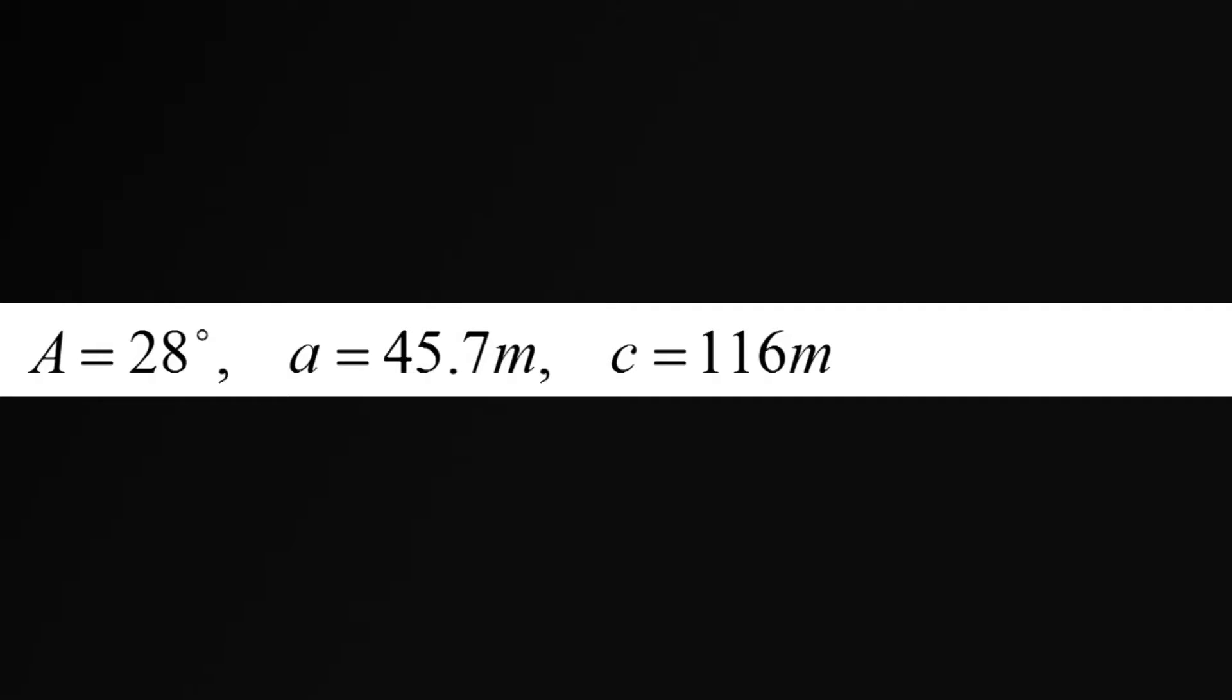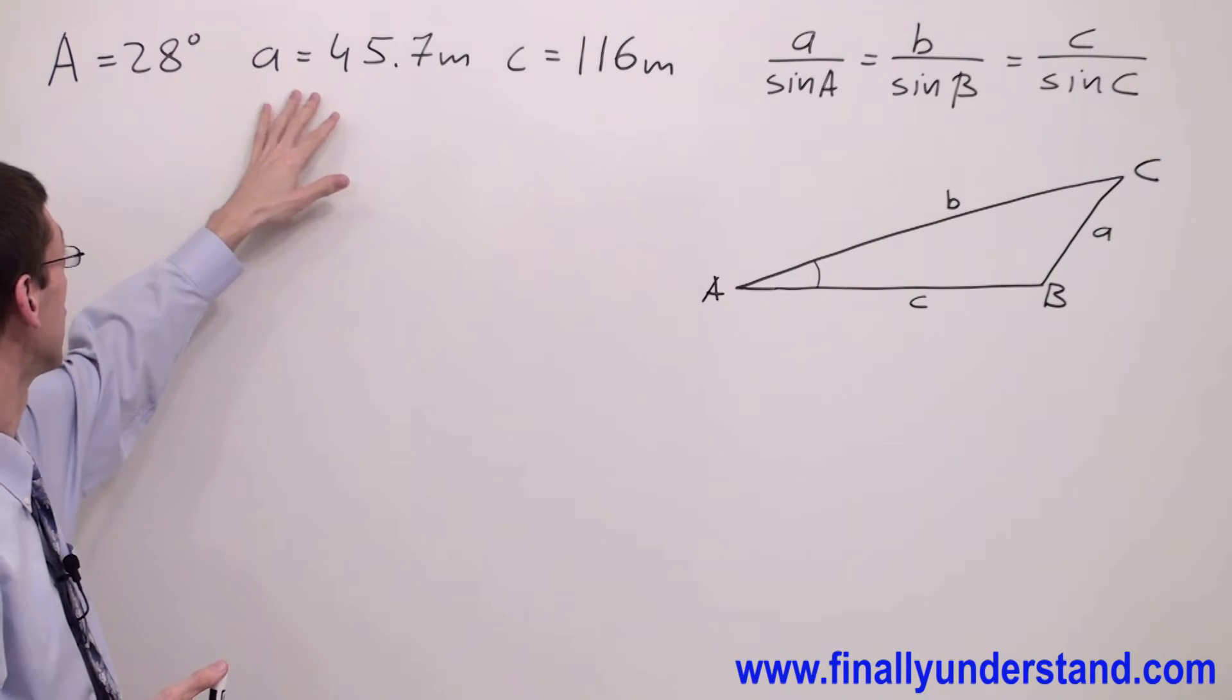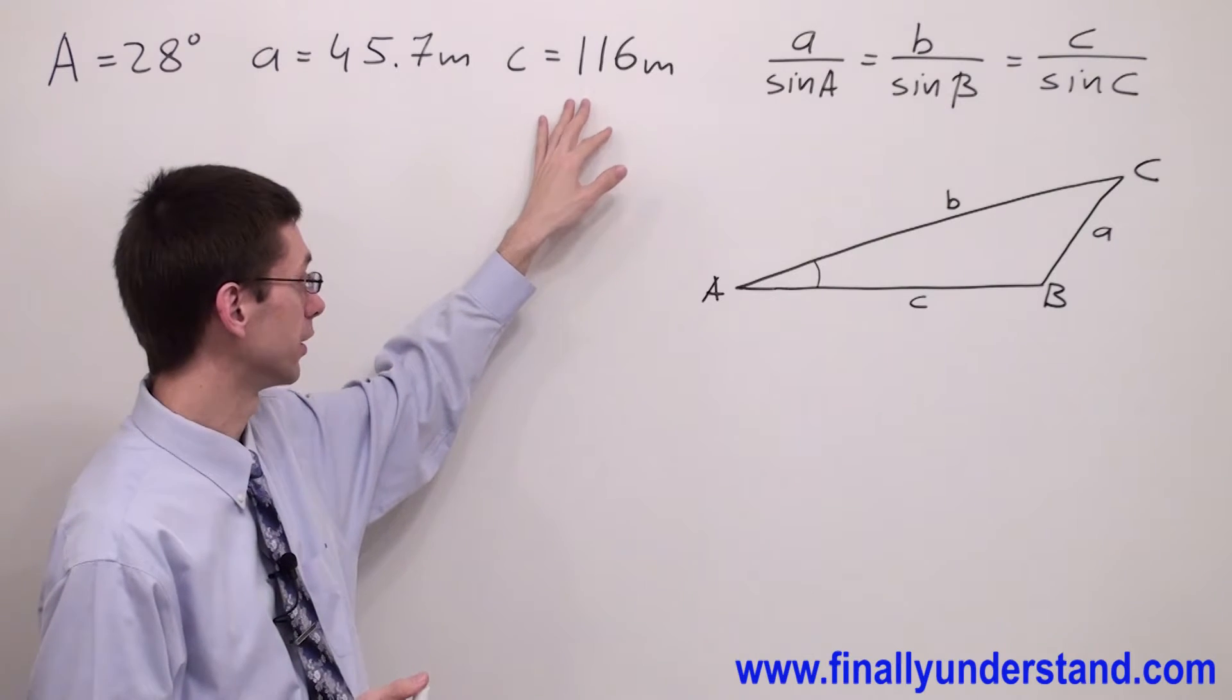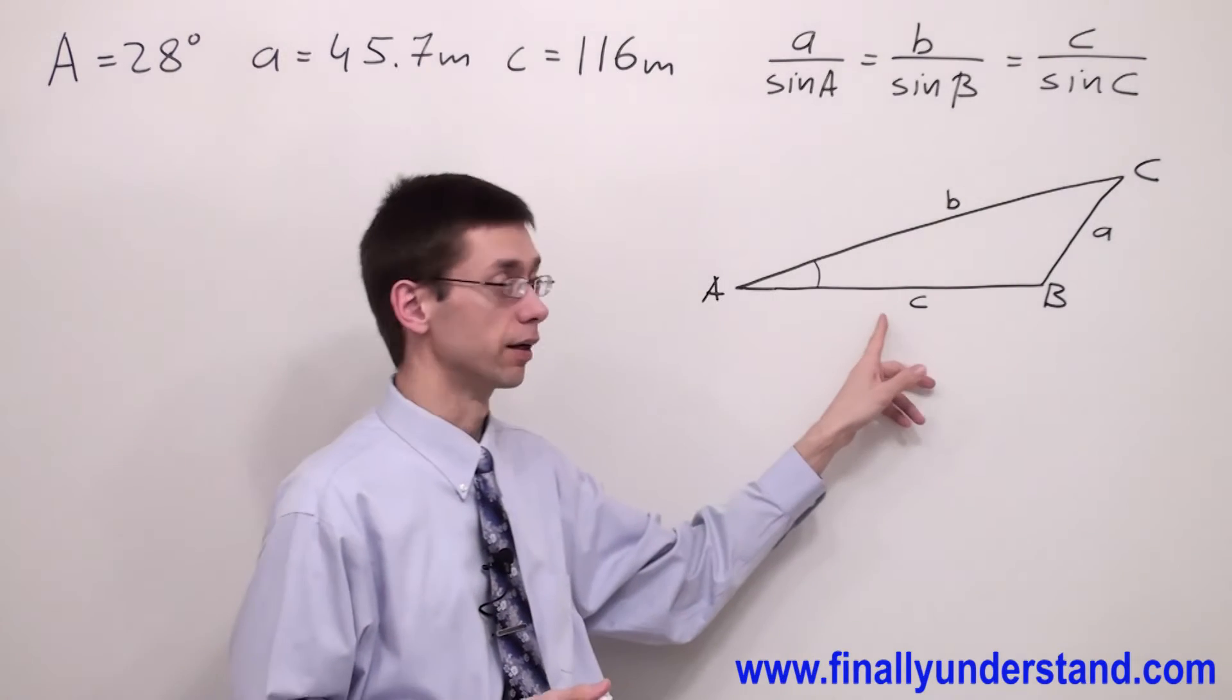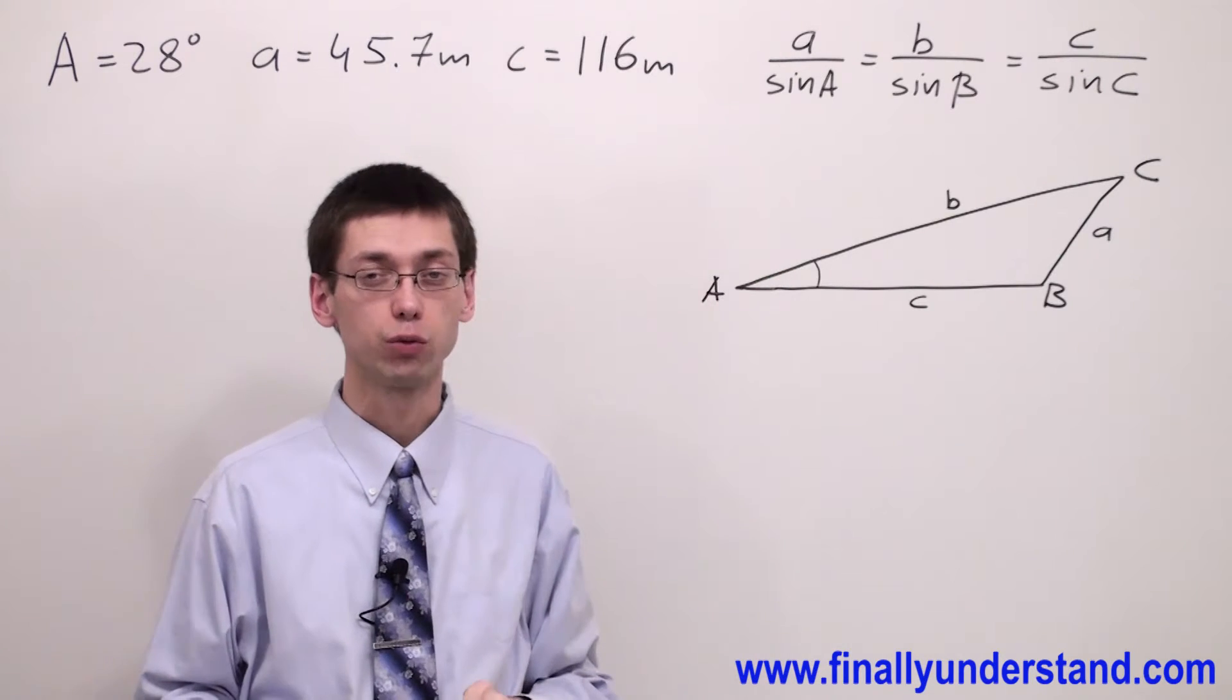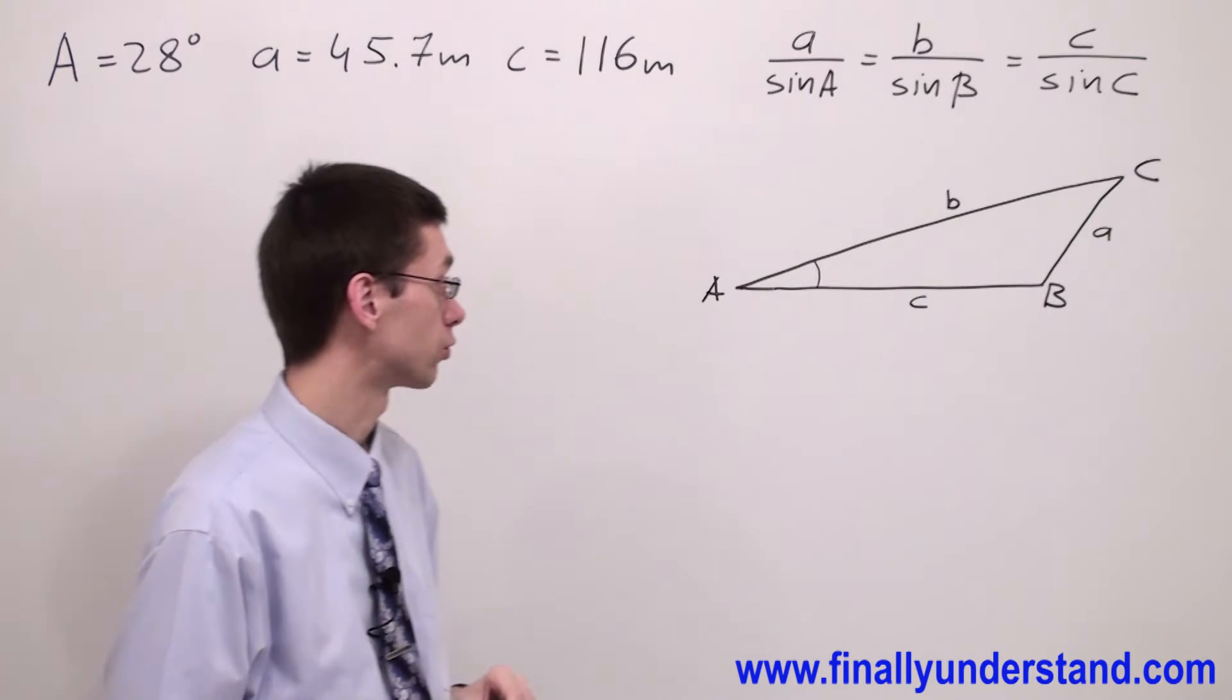We have another example on the board. We have given angle A which is an acute angle, we have given the opposite side to angle A, and we have given the adjacent side to angle A. Now because our angle is acute, the very first thing we're supposed to do is find the altitude of the triangle.